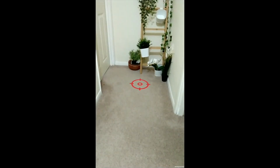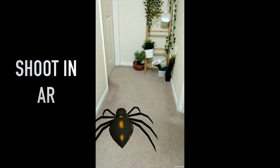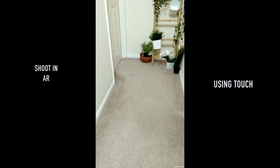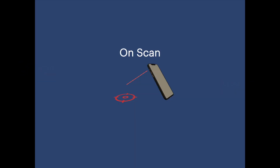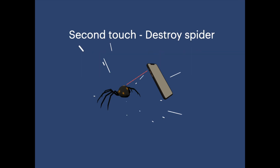Hi friends, welcome back to my channel. Today we will look into how to shoot an AR game object using touch. We will scan the usual plane surface, get an indicator, and on the first touch we spawn a prefab — in my case it's an animated spider. On the second touch we will destroy the spider when tapped on, with a little explosion.